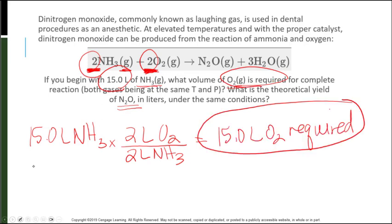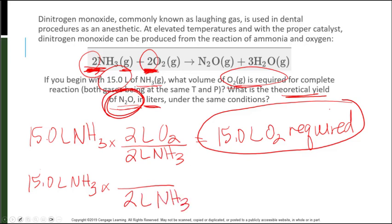Now let's start with the same 15 liters of NH3. And we want to know how much N2O in liters will be produced theoretically. Well, for every 2 liters of NH3, I have to have that on the bottom to cancel out liters and liters. I create 1 mole or 1 liter of N2O. So 15 times 1 divided by 2 should give me 7.50 liters of N2O produced.